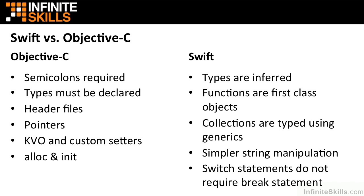The only time you actually need a semicolon in Swift is when you have two statements on the same physical line. In Objective-C, types must be declared explicitly — you can't define a variable without giving it a strict type. That's a little different in Swift, where you have type inference and the compiler can figure out from the context what type the variable is.